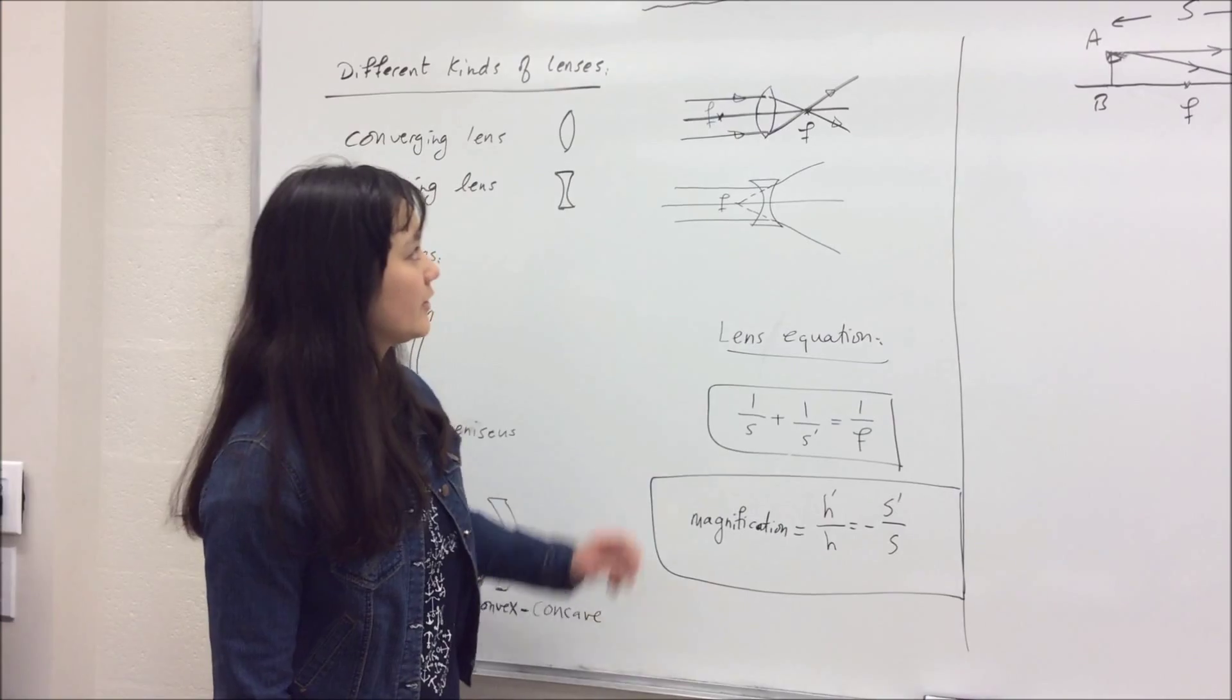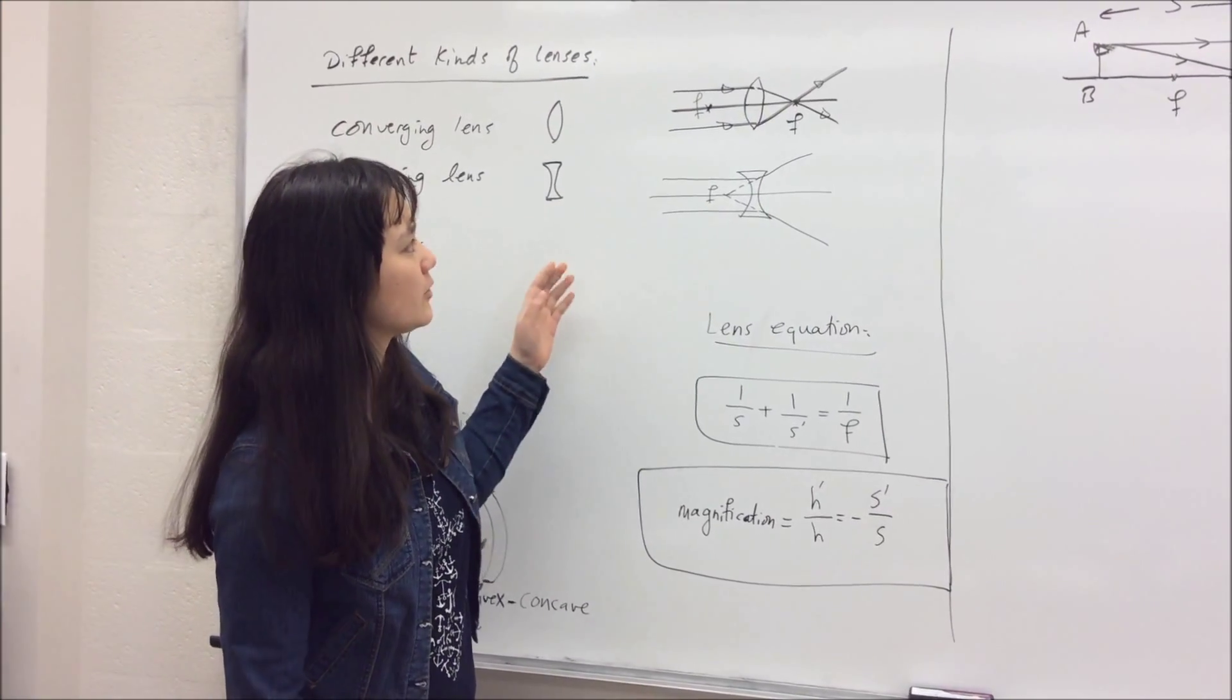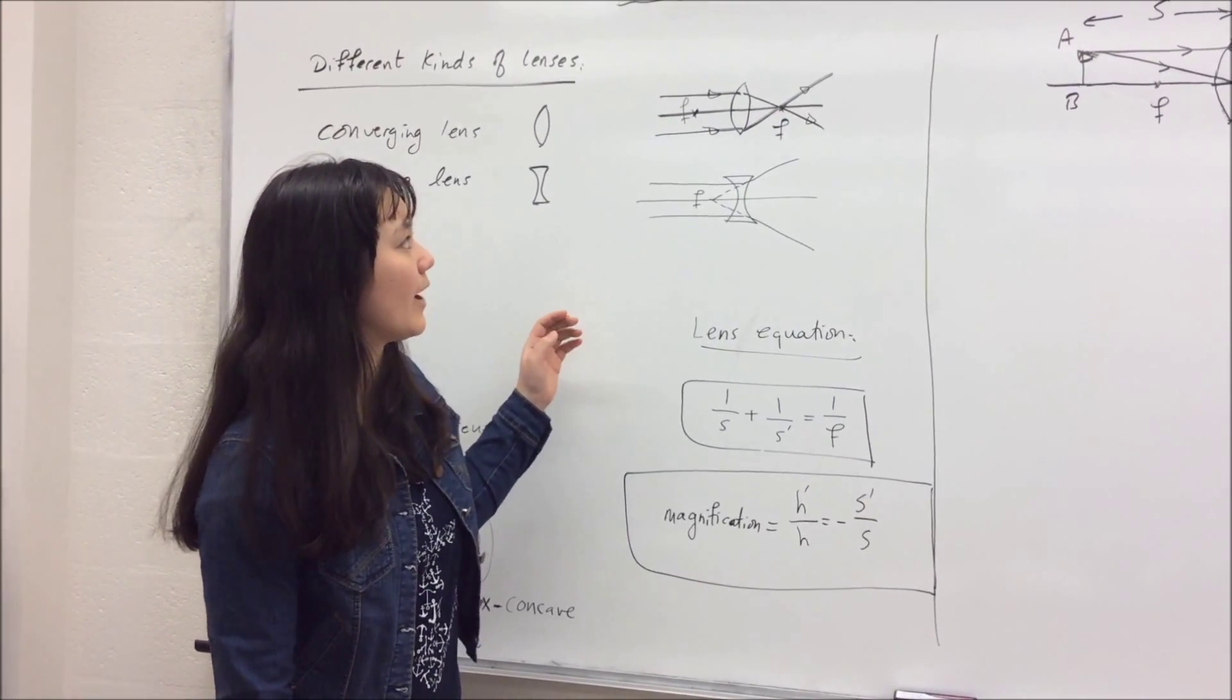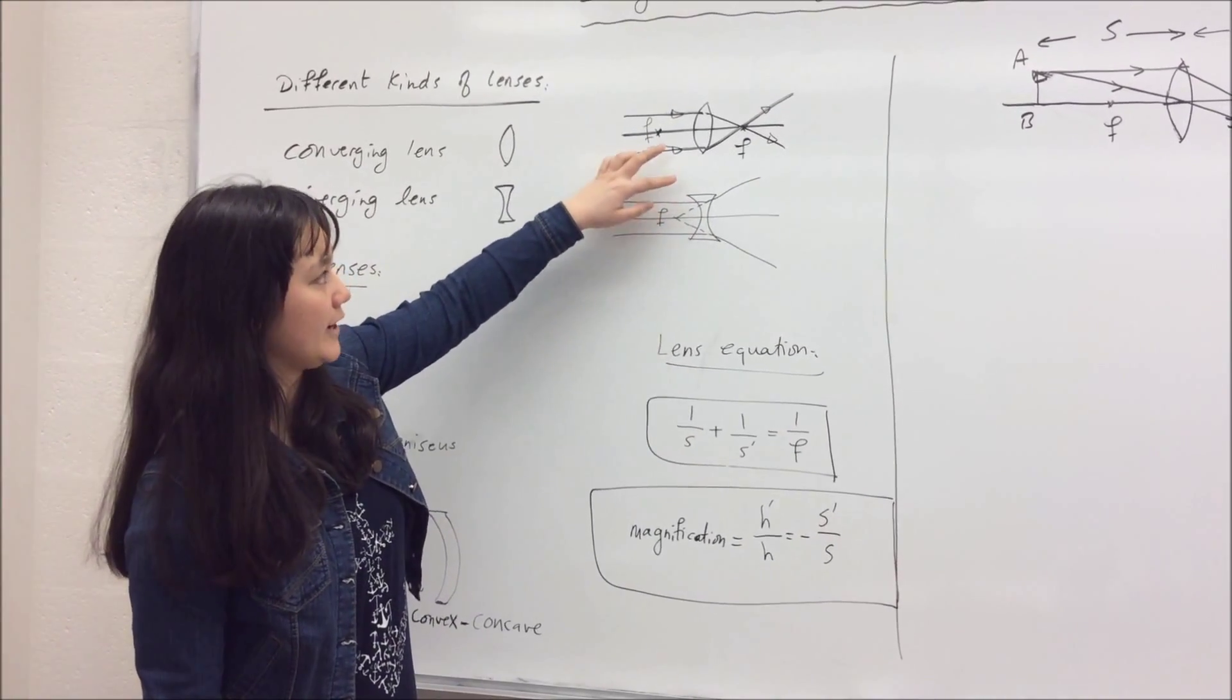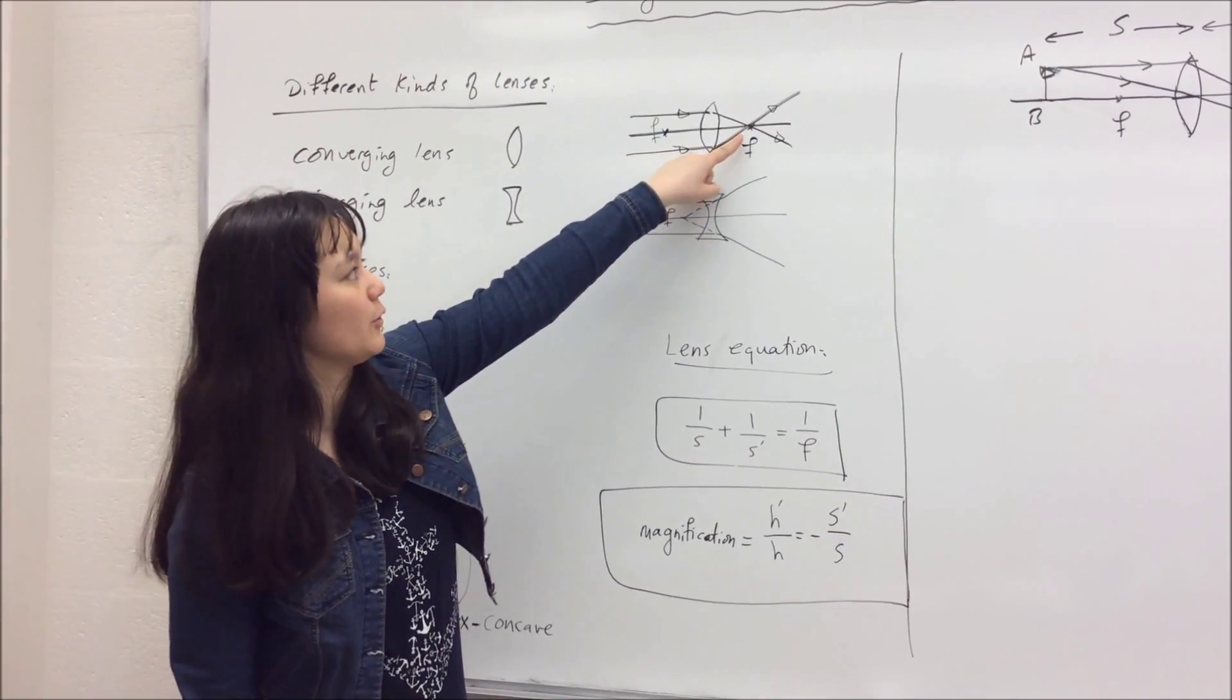This is a diagram of a converging lens, and as you see, there's a light source coming from an infinite distance away, and when it reaches the lens, the light rays refract, and so they meet at this focal point.